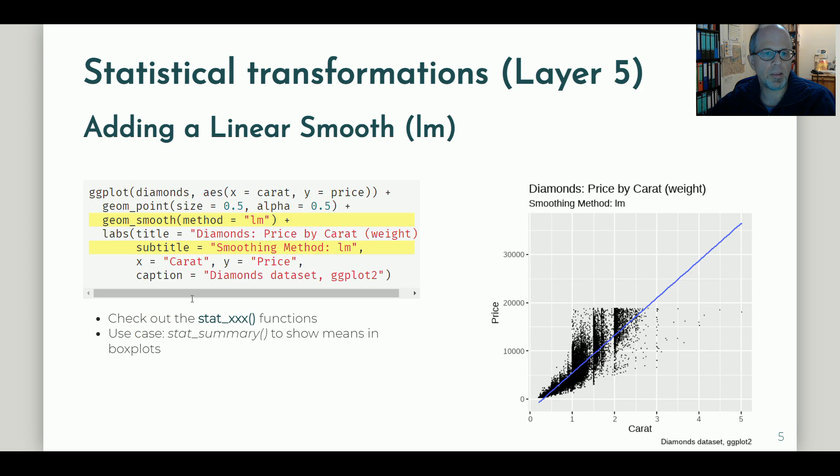The next layer we want to look into is the fifth layer, statistical transformations. Here I simply add a linear smooth to the scatter plot to see trends in the data. The key function here is the geom_smooth function and I specified the lm method. And I think it's easy to see that the linear smooth is not a very good fit for the data.